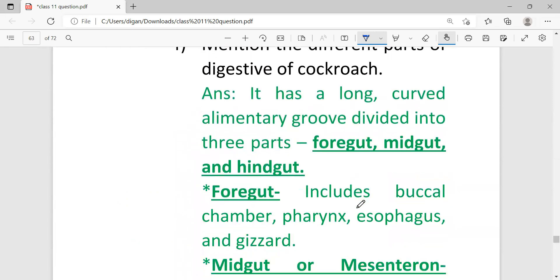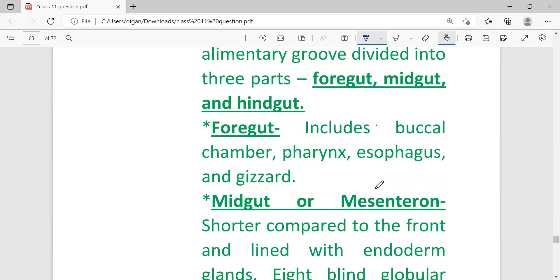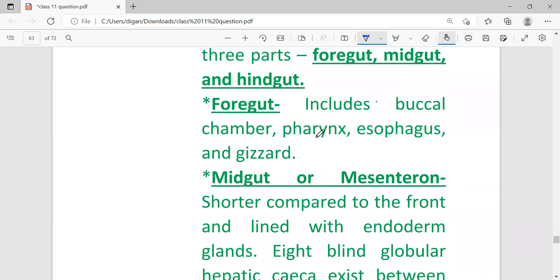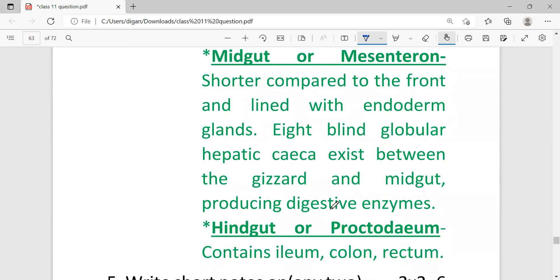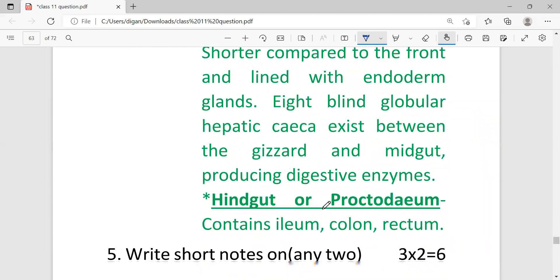Mention the different parts of digestive system of cockroach. The cockroach has a long alimentary canal divided into three parts: foregut, midgut, and hindgut. Foregut has these parts - for example, buccal cavity, pharynx, esophagus, and crop. Midgut or mesenteron contains these organs. Last one is hindgut which contains ileum, colon, and rectum.